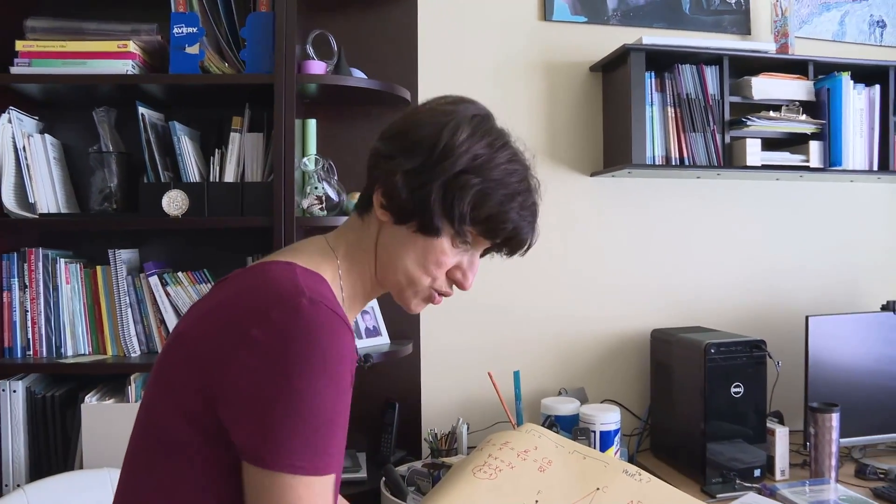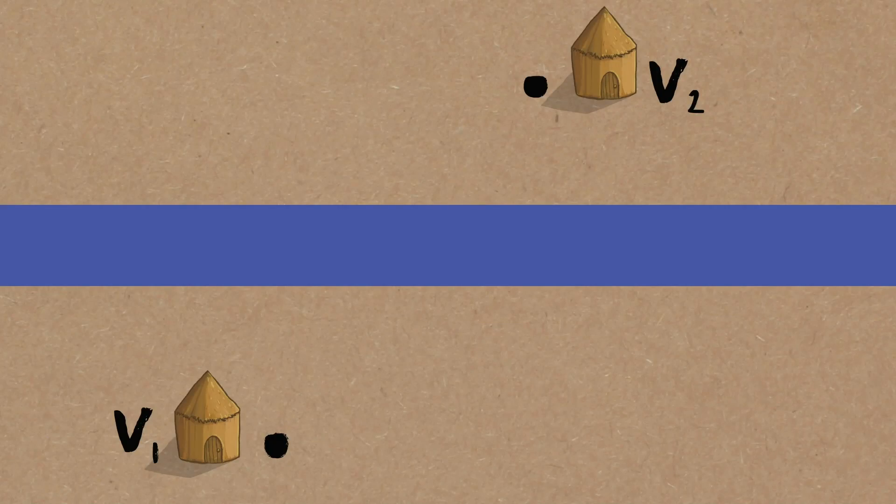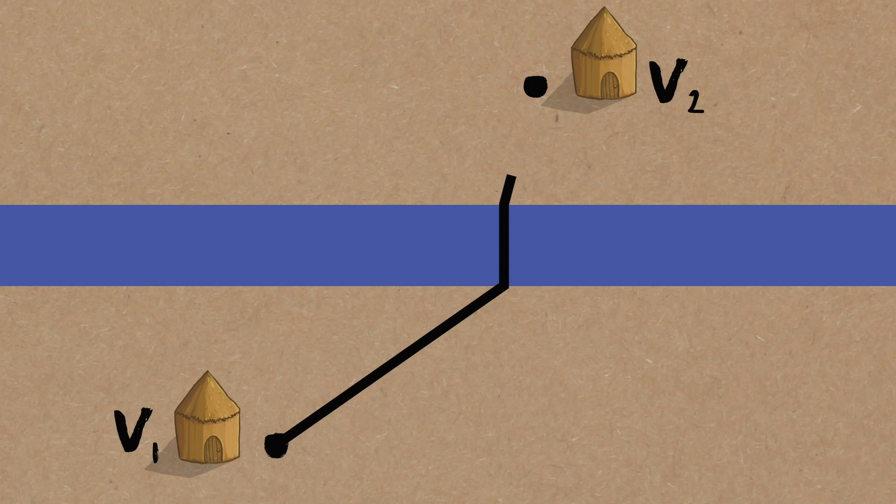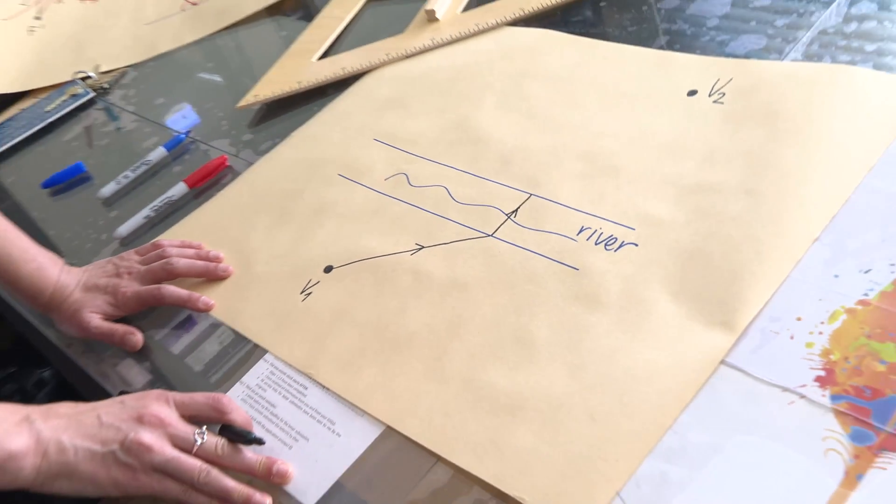But what the two villages want is to build a bridge across the river somewhere so that when the market happens every week in village two, the villagers from village one will walk the shortest possible path. So what do I mean by this? First they have to get to the bridge with all of their goods, walk over and it's going to be a long bridge. This is a wide river.